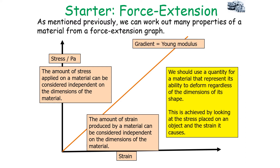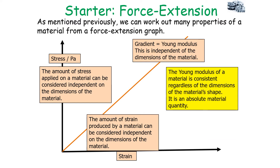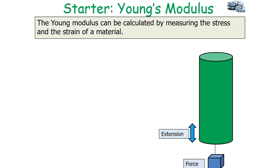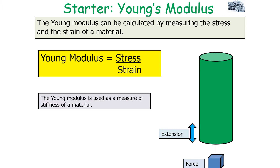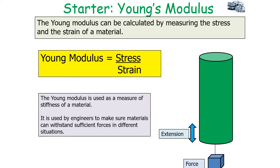In a stress-strain graph, the gradient is the Young Modulus, which is independent of the dimensions of the material. The Young Modulus is consistent regardless of the shape of the material — whether it's a sphere, cube, or sheet, it always has the same Young Modulus. It can be calculated by measuring stress and strain, since Young Modulus equals stress over strain, and is used by engineers to ensure materials can withstand sufficient forces in different situations.